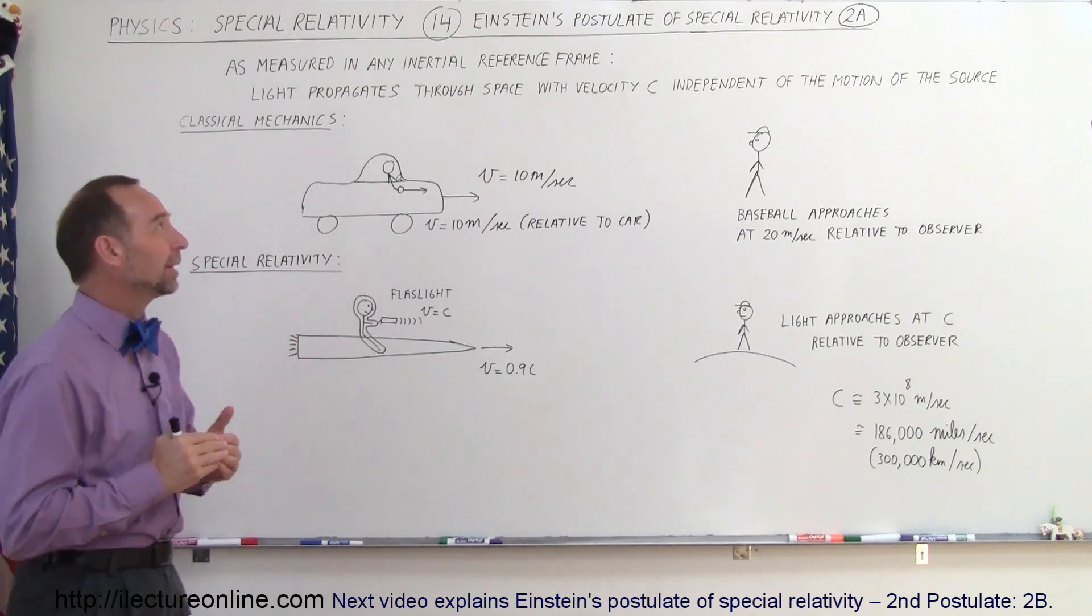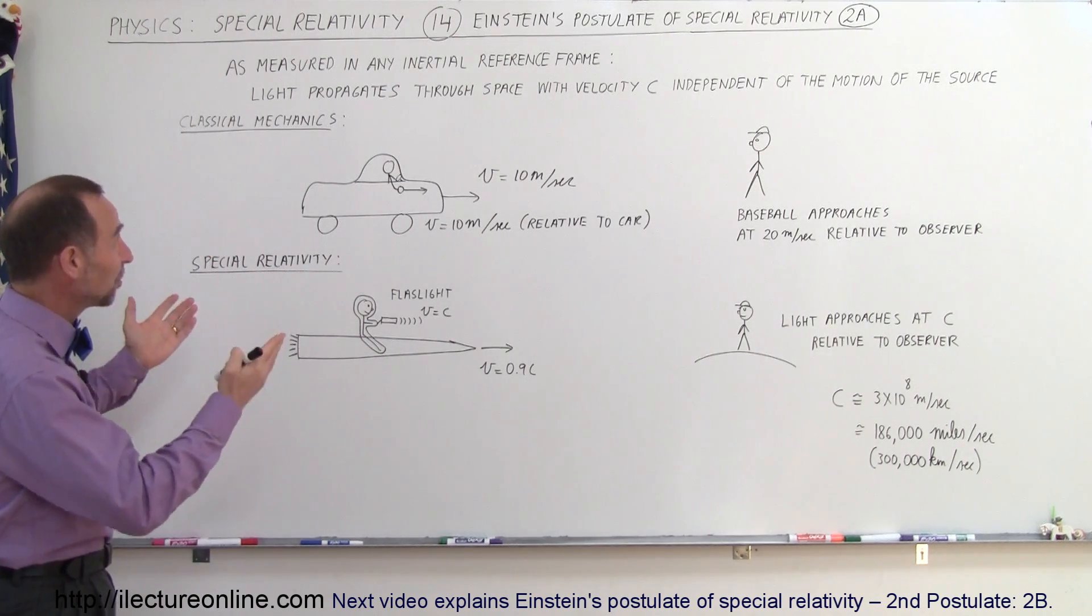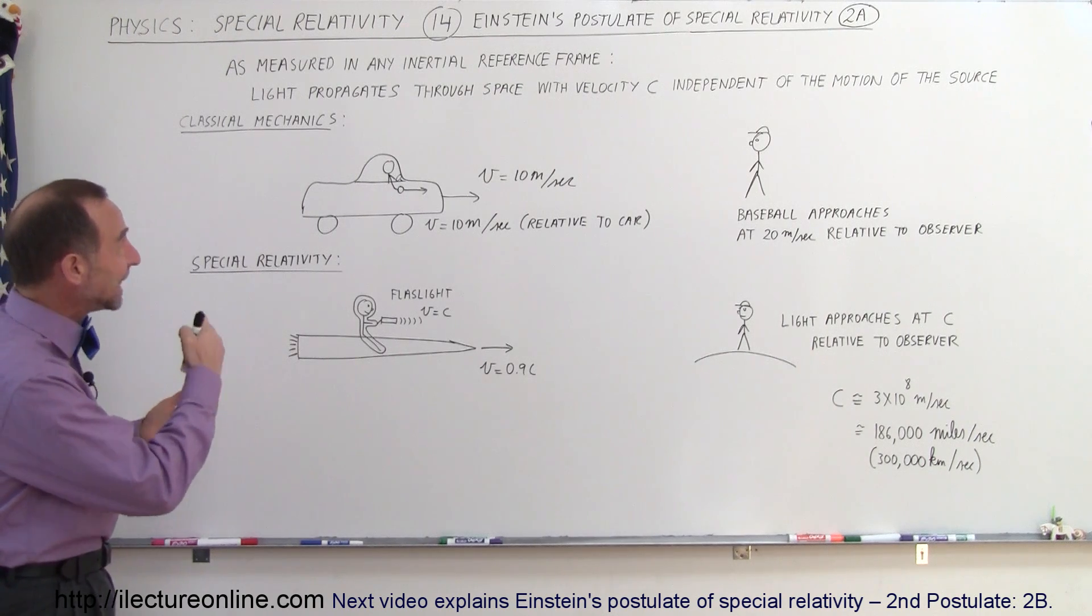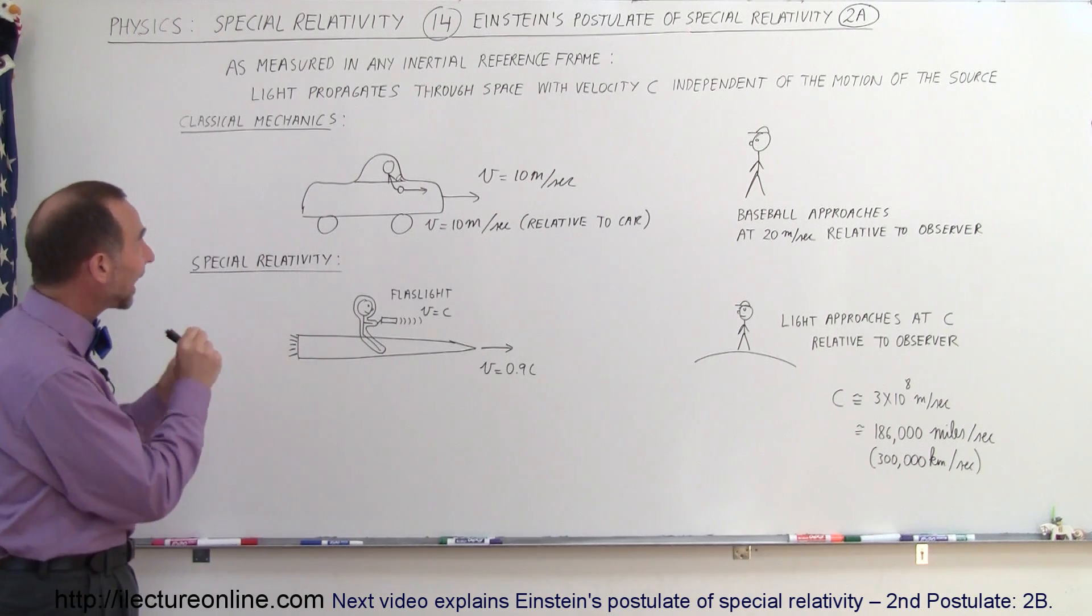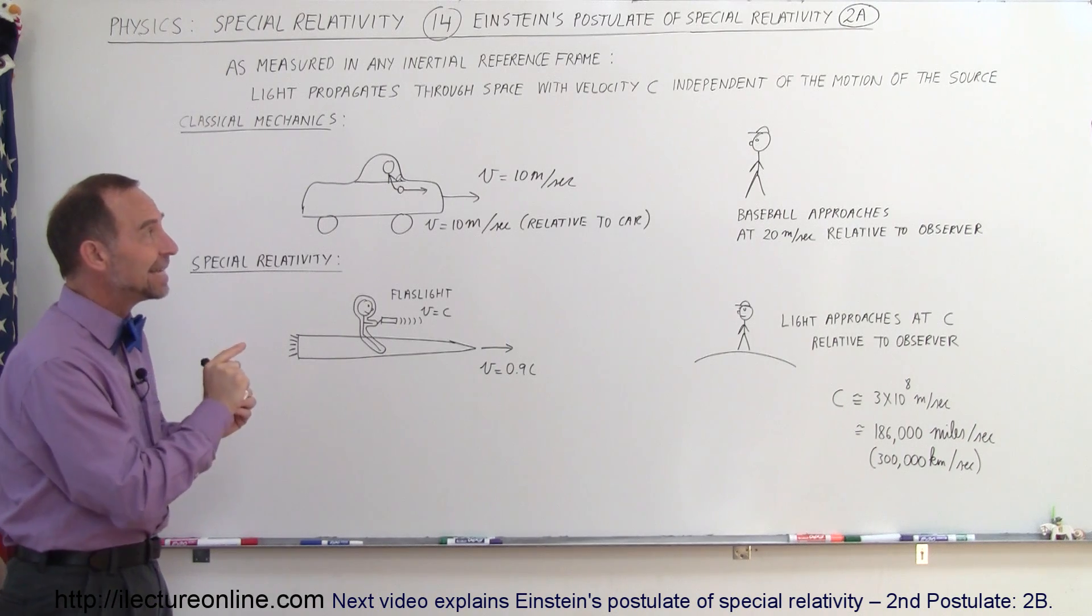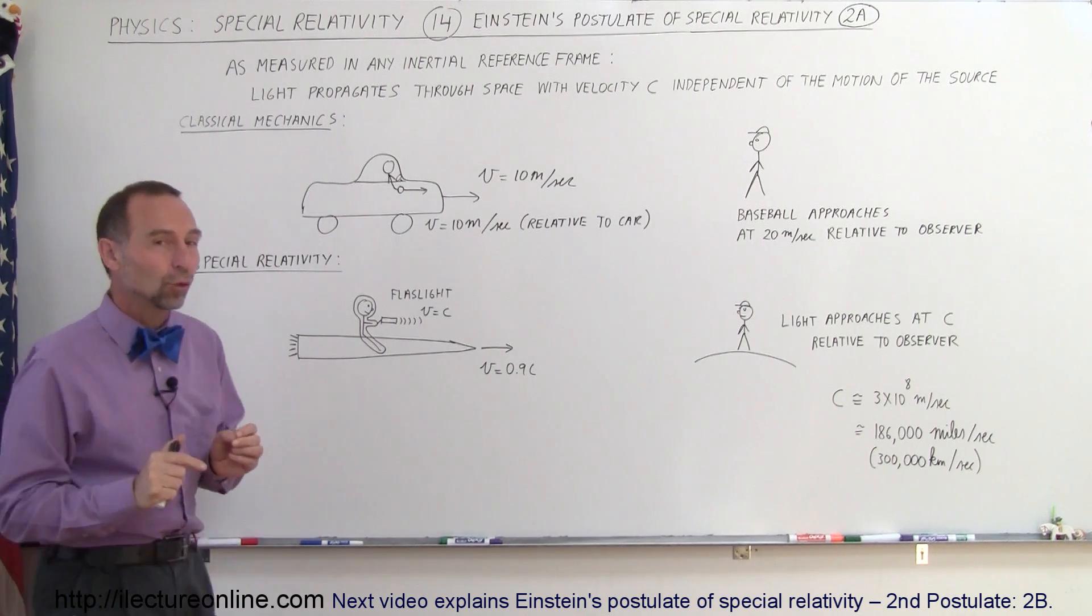Let me explain what we mean by that. In special terms, we could say as measured in any inertial reference frame, light propagates through space with velocity C, independent of the motion of the source.